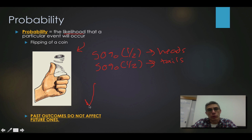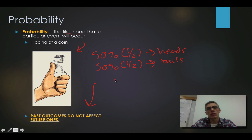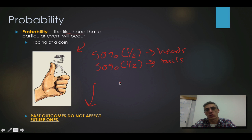One important thing to understand with probability is that past outcomes do not affect future ones, and that's important to understand when you look at Punnett squares as well. If you flip the coin and it shows up heads, and then you flip it again and it shows up heads, and then a third time and it shows up heads again — a lot of us would think there's a better chance it will show up heads next time, but that's not the case. Each time you flip that coin it's considered an independent event, so past outcomes do not affect any of the future outcomes.